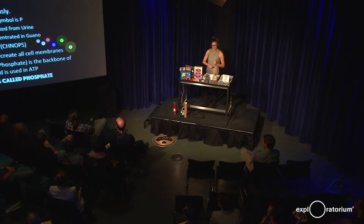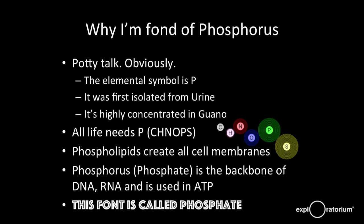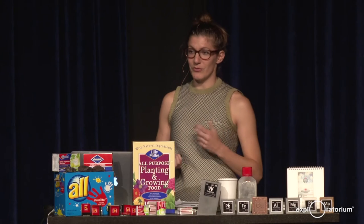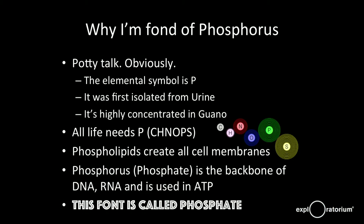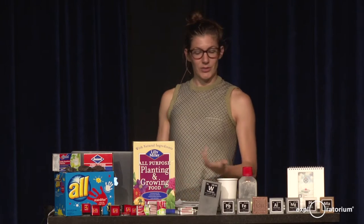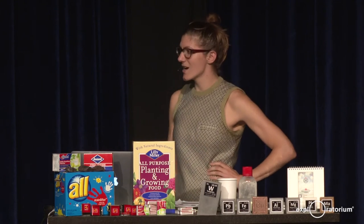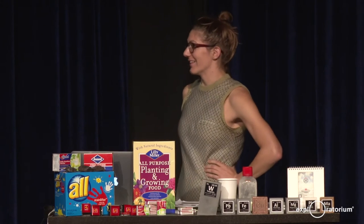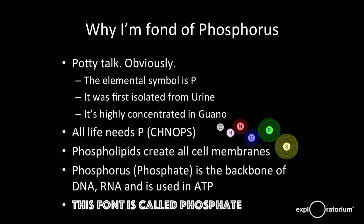As an astrobiologist and a human being of planet Earth, why am I fond of phosphorus? Well, potty talk reasons. Like any good astronomer, we love Uranus jokes. Do you guys want to know why I wanted to study astronomy? To observe Uranus. It's like my best joke. So it's got a great element symbol — it's P. It was first isolated from urine, which is hilarious. Some dude with fake hair just peeing in a pot and boiling it. Pretty funny.